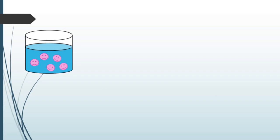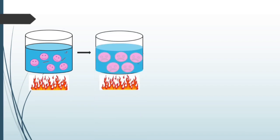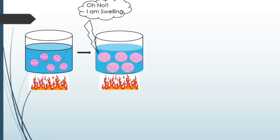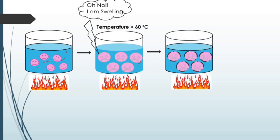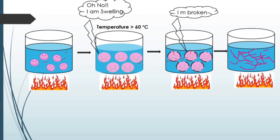Here is a pictorial explanation: starch granules are present in normal water at ambient temperature and won't dissolve. When we start heating, swelling of the starch granules occurs. Further, if the temperature increases to more than 60 degrees Celsius, disintegration of the starch granules will occur. The amylose will leach out, and then it will dissolve and make the liquid thicken or become viscous.